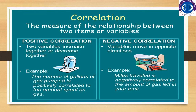Correlation is the measure of relationship between two variables. Two variables that increase together or decrease together have positive correlation, whereas variables that move in opposite directions have negative correlation. For example, the number of gallons of gas pumped is positively correlated to the amount spent on gas, while miles travelled is negatively correlated to the amount of gas left in the tank.